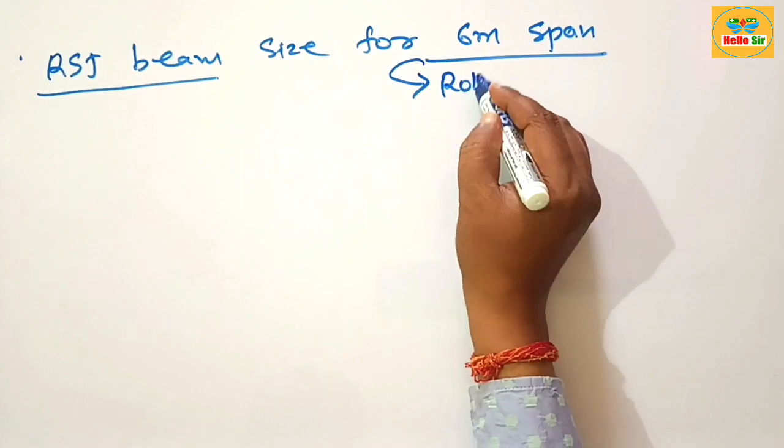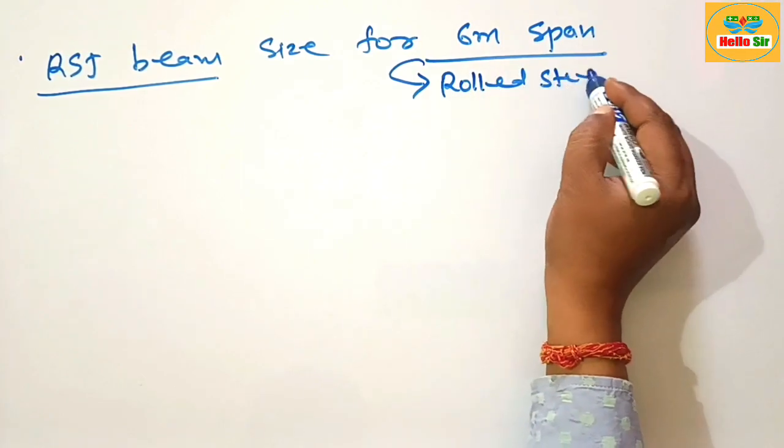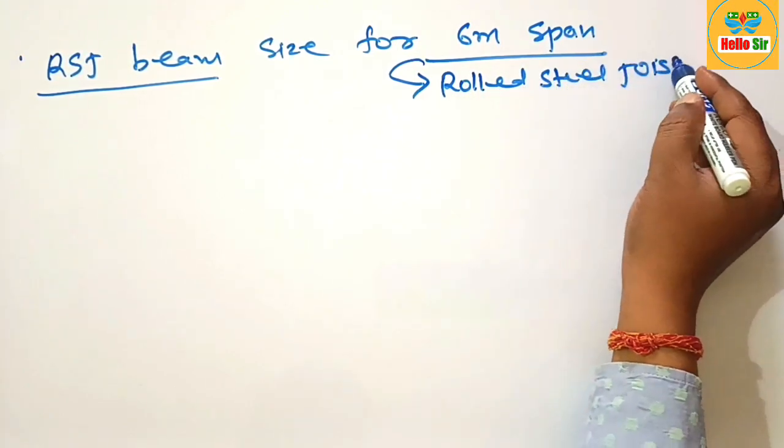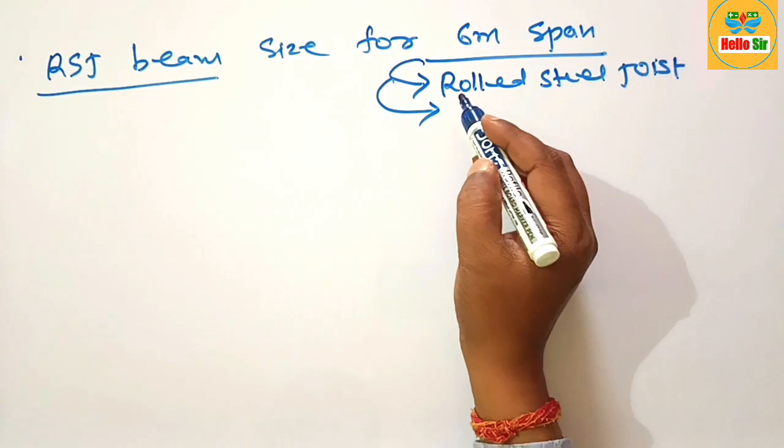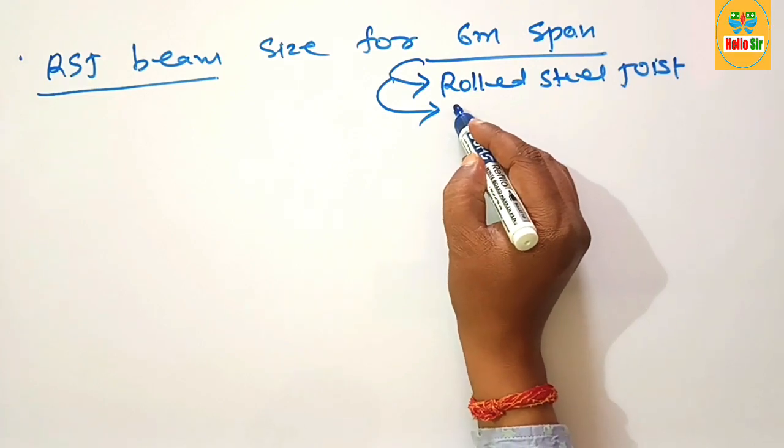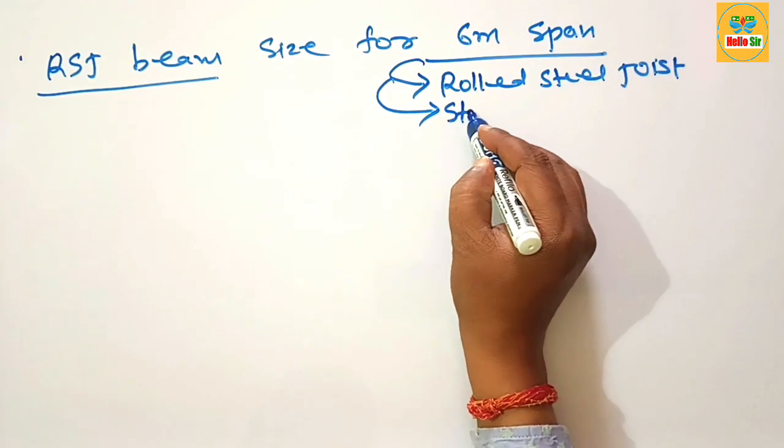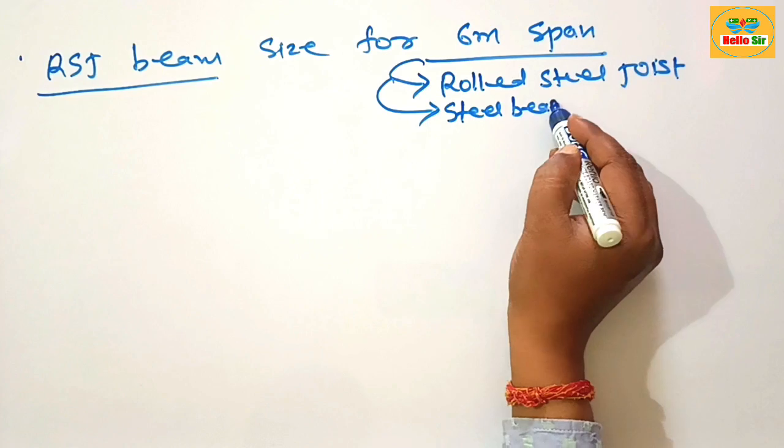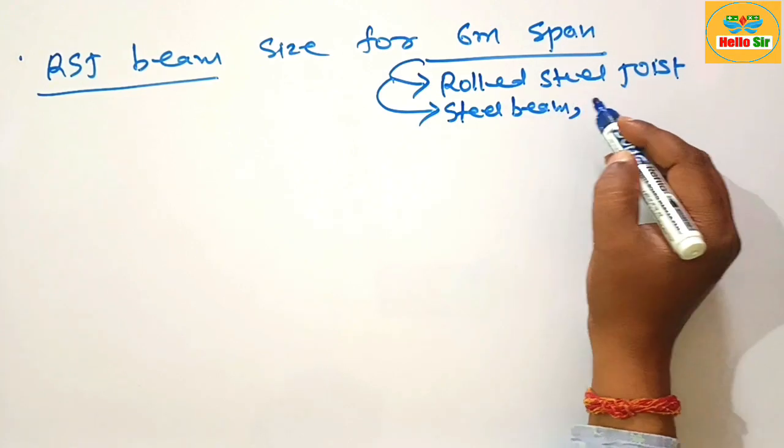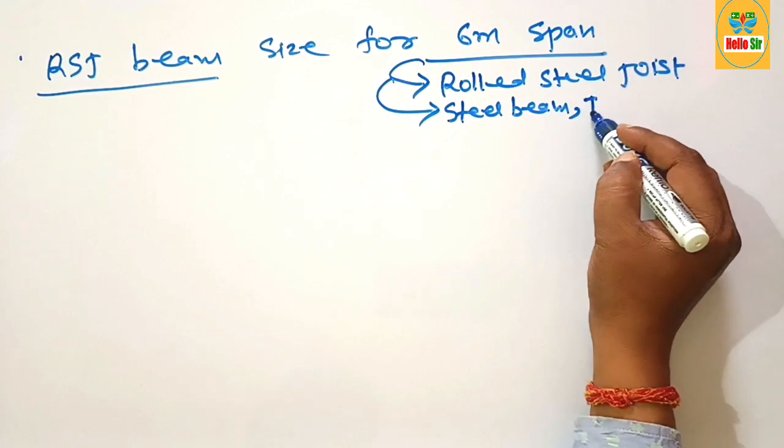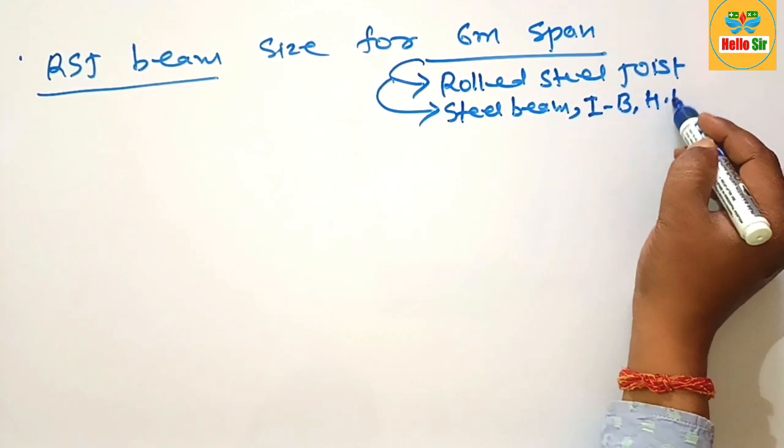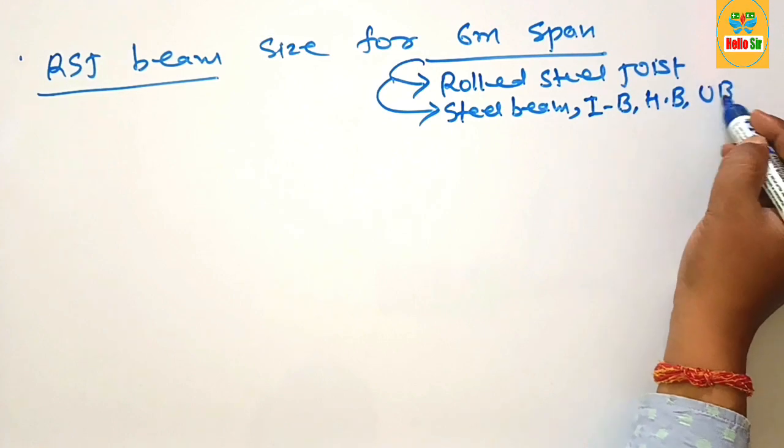It is a rolled steel joist commonly used by builders and trade people who work with steel. That's why it is also known as steel beam. Their cross section looks like I and H structure, so it is also known as I beam, H beam, and universal beam.